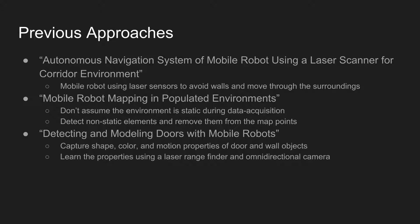Another paper is mobile robot mapping in populated environments. They assumed the environment is not static during data acquisition, as people or obstacles could be moving around. Their focus was to detect non-static elements and remove them from the map points as they generated both accurate 2D and 3D maps. The third paper, detecting and modeling doors with mobile robots, was done at Stanford University, where they captured the shape, color, and motion properties of doors and wall objects using a laser rangefinder and omnidirectional camera.